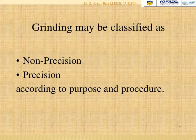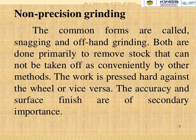Grinding may be classified into two different categories based on purpose and procedure: non-precision grinding and precision grinding. Non-precision grinding doesn't give more priority to surface finish. The common forms are called snatching and off-hand grinding, done primarily to remove stock that cannot be taken off conveniently by other methods. The work is pressed hard against the wheel or vice versa, and accuracy and surface finish are of secondary importance.